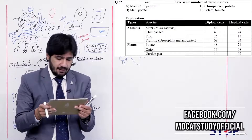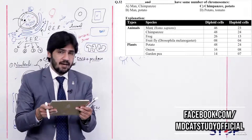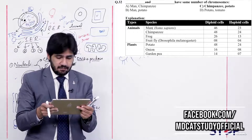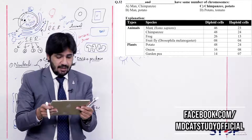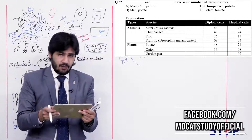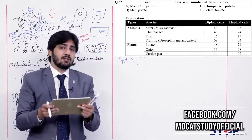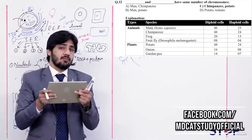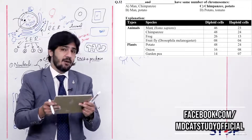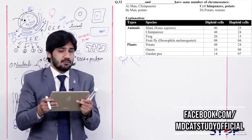Question 32: Blank and blank have the same number of chromosomes — (alpha) man and chimpanzee, (beta) man and potato, (charlie) chimpanzee and potato, (delta) potato and tomato. Chimpanzee has 48 chromosomes and potato also has 48 chromosomes. Man has 46 and chimpanzee has 48, so they differ. The right answer is charlie — chimpanzee and potato both have 48 chromosomes.